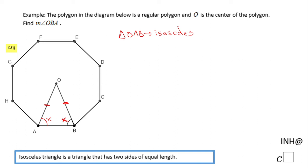If we find out the measure of this angle, angle AOB, then we can find out X very easily. So how are we gonna find the measure of angle AOB? That is a central angle for this polygon.